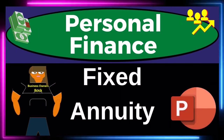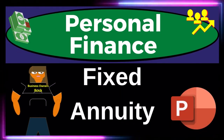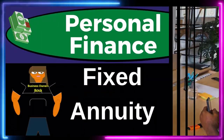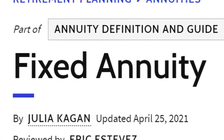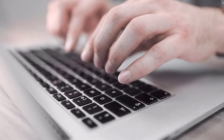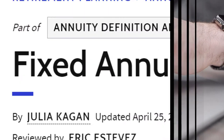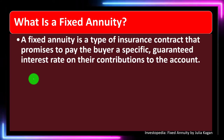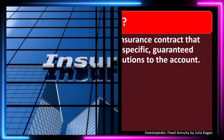Personal finance PowerPoint presentation on fixed annuities. Prepare to get financially fit by practicing personal finance. Most of this information can be found at Investopedia's fixed annuity article, which you can find online. This is by Julia Kagan, updated April 25th, 2021. In prior presentations we've looked at insurance in general, then life insurance, and now we're taking a look at fixed annuities.